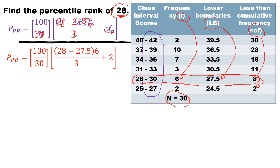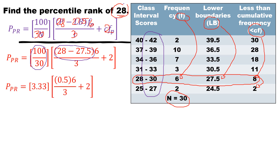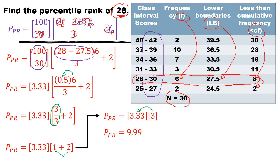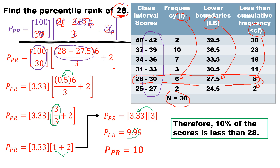Simplifying: 100 divided by 30 gives approximately 3.33, and 28 minus 27.5 gives 0.5. Multiplying 0.5 by 6 gives 3. Dividing 3 by 3 gives 1. Adding 1 plus 2 gives 3. Multiplying 3 by 3.33 gives 9.99. Rounding to a whole number, the percentile rank of 28 is 10, meaning 10% of the scores is less than 28.